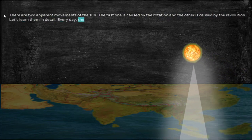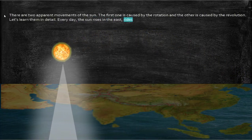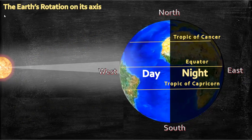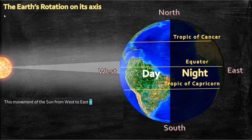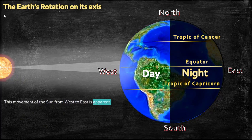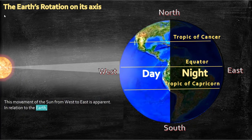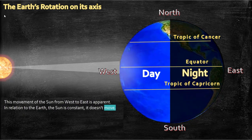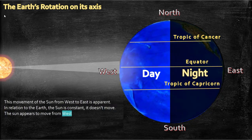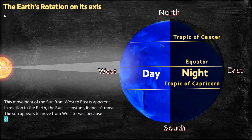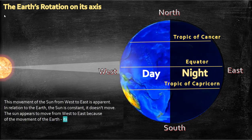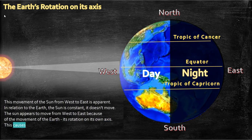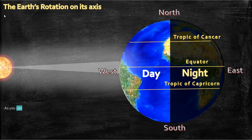Every day, the sun rises in the east, rides across the sky, and sets in the west. This movement of the sun from east to west is apparent. In relation to the earth, the sun is constant — it doesn't move. The sun appears to move because of the rotation of the earth on its own axis. This causes day and night.